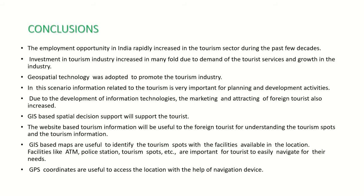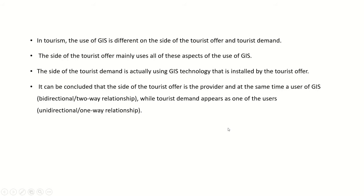GPS coordinates are useful for accessing locations with the help of navigation devices. In tourism, GIS is used differently on the side of tourist offer and tourist demand. The tourist offer side mainly uses all aspects of GIS. The tourist demand side uses GIS technology installed by the tourist offer. It can be concluded that the tourist offer side is the provider and user of GIS as bidirectional, while tourist demand appears as a unidirectional user.